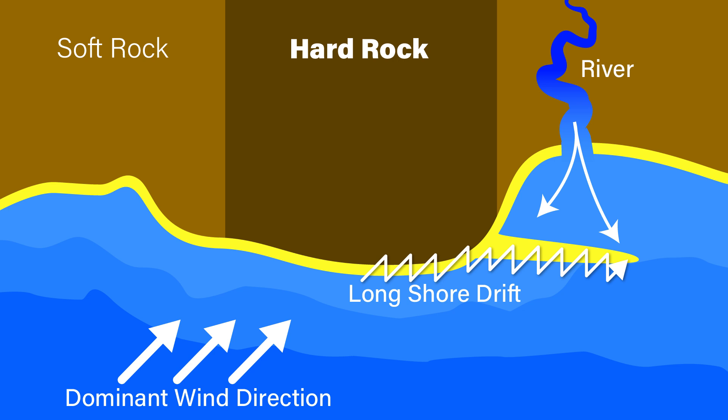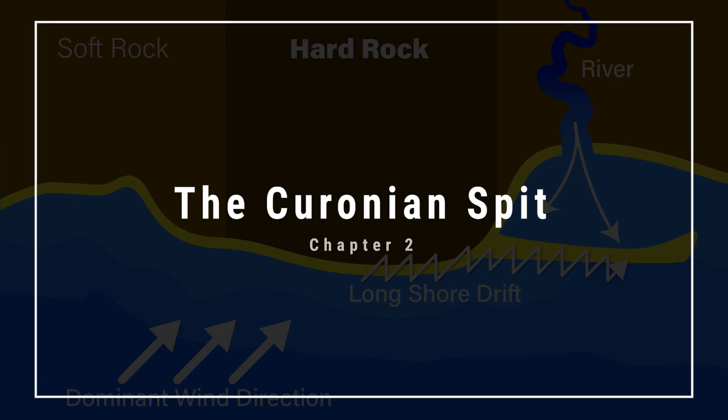This means that as a spit grows, if the forces fall out of balance — for example when the spit grows too far away from the supporting river — the growth is halted and the erosive forces get to work, potentially destroying the spit again. Now that we have all the ingredients needed to make a spit, let's look at a real-world example to see how these forces have played out over time.